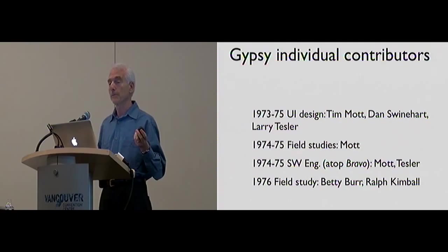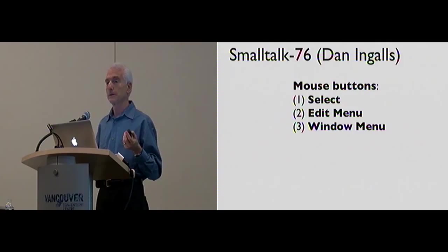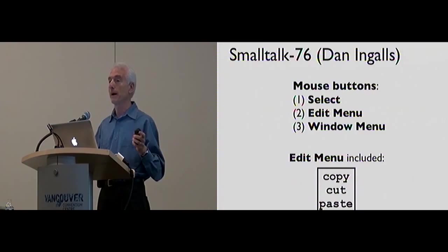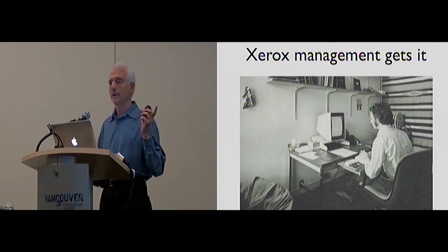Gypsy actually ended up being done at a critical time — it was finished in early '75. Dan Swinehart was implementing something called Woodstock, an office automation system, and we shared ideas — he made his thing modeless too, but it could integrate electronic mail with documents. Smalltalk also adopted cut, copy, paste after we put it in Gypsy — and I think they did a better job. They still had three mouse buttons but moved cut, copy, paste into a pop-up menu, which is kind of what we do today in addition to keyboard accelerators.